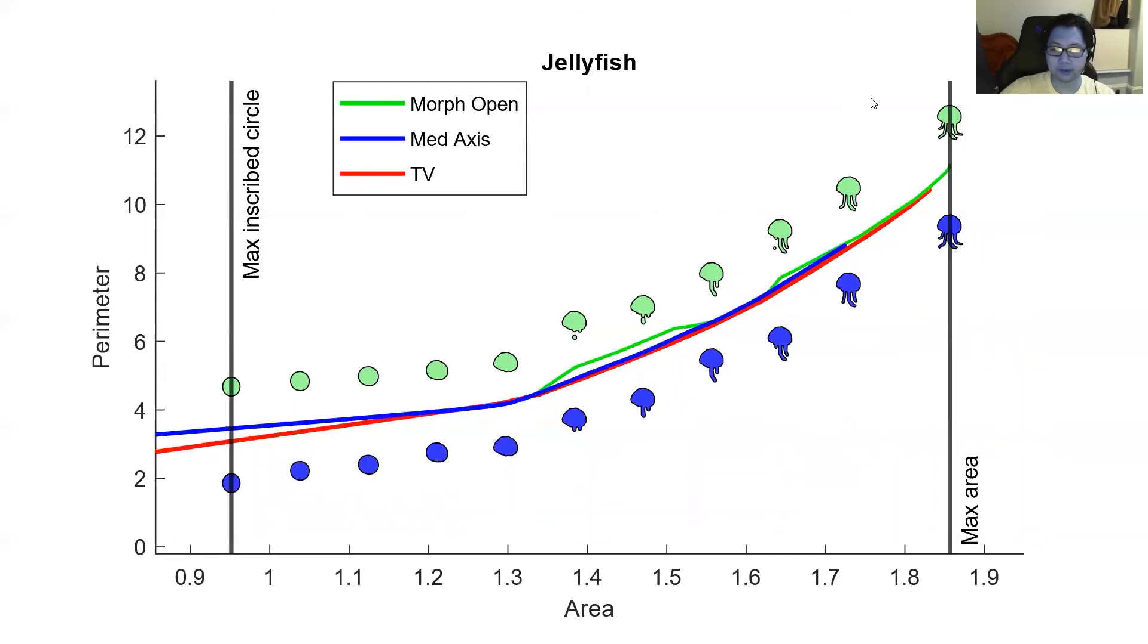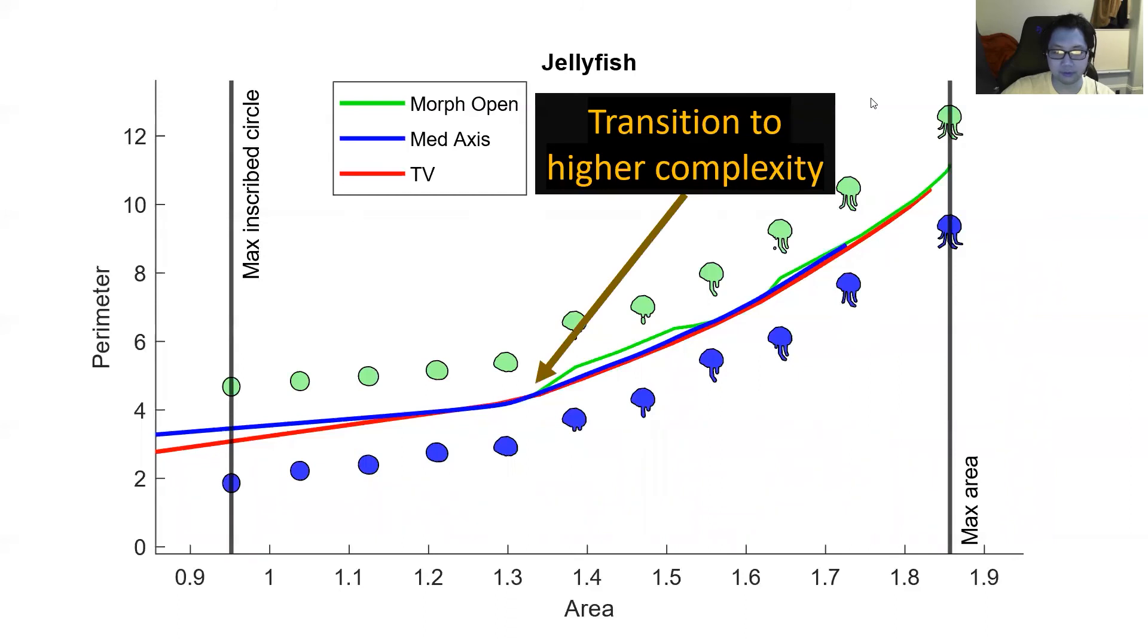Okay, I'd like to show one more example of a thick neck domain called the jellyfish. Again, you can see the morphological opening constructs subdomains that are disconnected, forcing it to pay extra perimeter. Our method maintains a connected subdomain, allowing it to use minimal perimeter. One more thing about the jellyfish domain that I find fascinating is this region of the profile. This is where the profile suddenly changes slope, indicating a transition to higher complexity. And in this case, it's completely intuitive why there's a sudden change. This corresponds to exactly where the subdomains start to include tentacles of the jellyfish. So you can really see at what resolution a domain starts to get more complex.